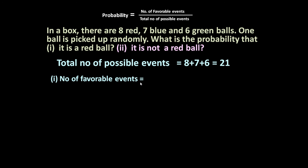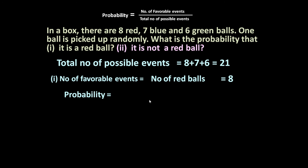For Part 1, number of favorable events: the ball picked up must be a red ball and there are 8 red balls, so number of favorable events equals the number of red balls in the box, which is 8. So probability = number of favorable events, 8, divided by total number of possible events, 21. The answer is 8 upon 21.